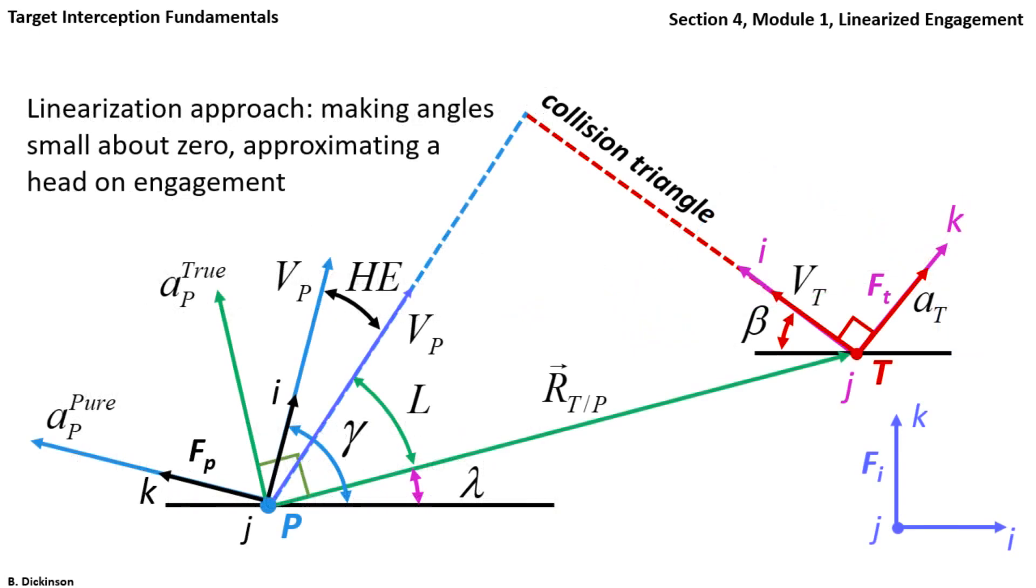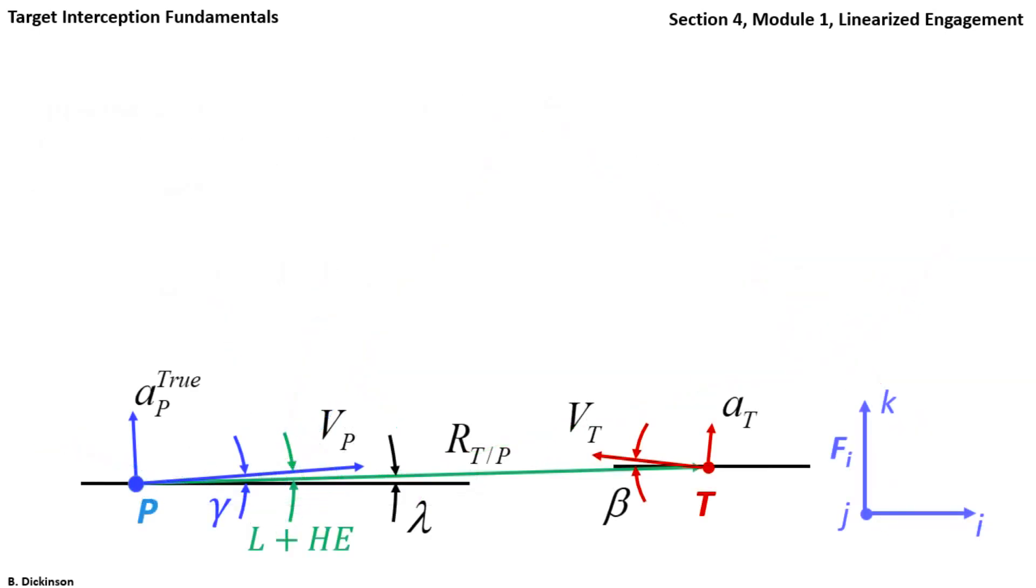Here's our illustration from Section 3, where we developed our kinematic equations. The non-linearity comes from potentially large angles, for example, large flight path angle, large line of sight angle, large target heading angle. So our approach is to make the angles small and determine new engagement equations. This can be thought of as linearizing about the angles being zero. We can also think about it as linearization around a head-on engagement.